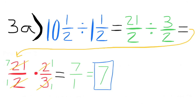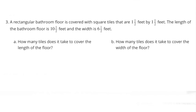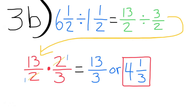Part b: how many tiles does it take to cover the width of the floor? The width of the bathroom, six and a half, divided by the width of the tiles, one and a half, equals thirteen halves divided by three halves. The next step is thirteen halves times two-thirds, which simplifies to thirteen over one times one-third, equaling thirteen-thirds, or four and one-third. It would take four and one-third tiles to tile the width of the bathroom floor.